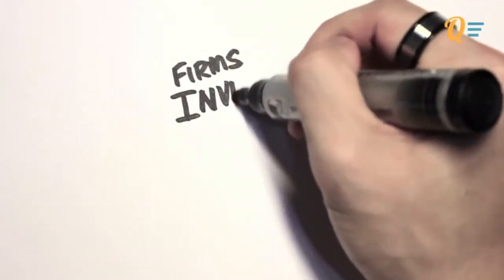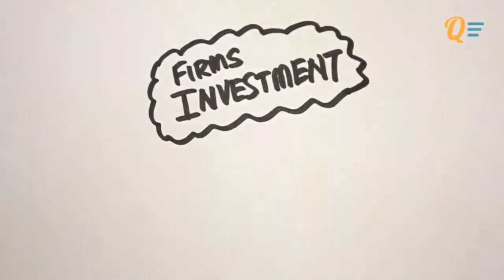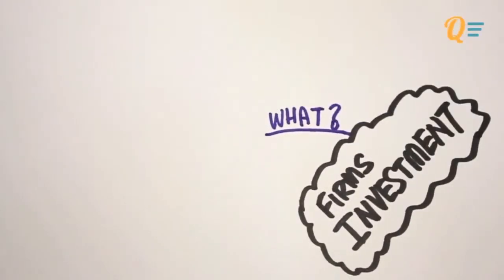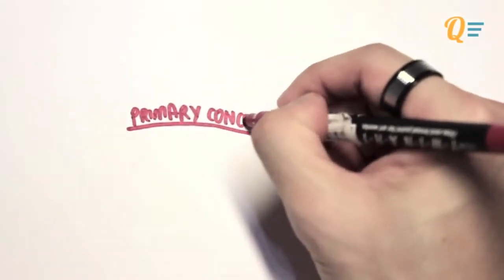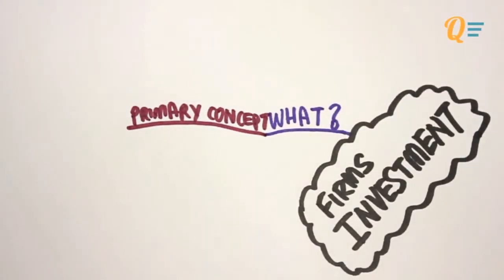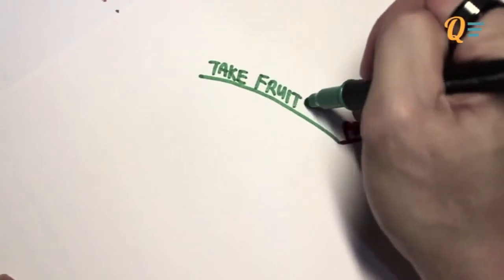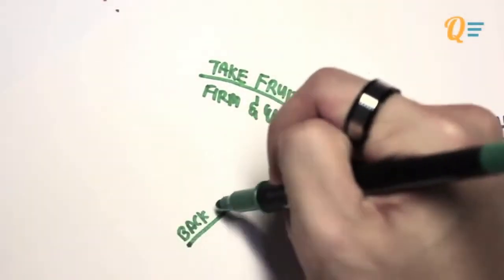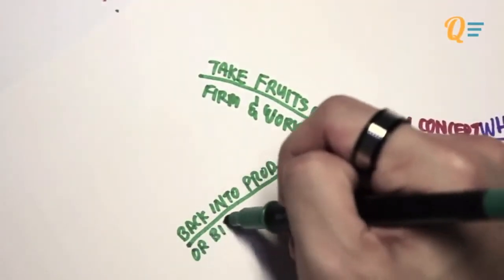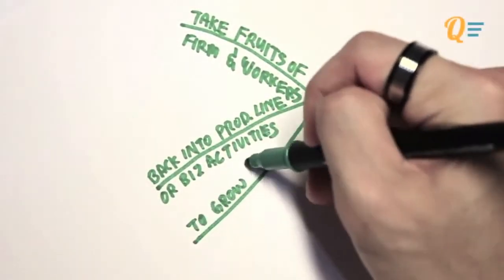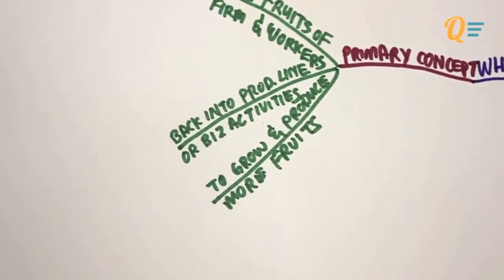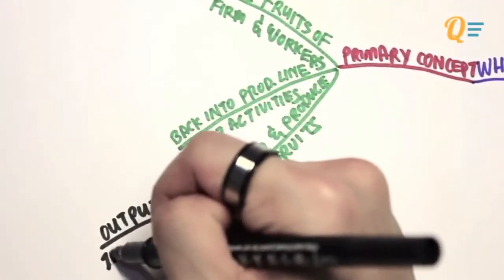In this video, we will be talking about the second component of aggregate expenditure called firm's investment. The first question we're going to ask ourselves is: what is investment? The primary concept of investment is actually quite simple. It is the activity of taking the fruits from the firm and its workers and putting it back into the production line or business activities so that we can eventually create or grow more fruit — meaning more output. According to the A equals Y at equilibrium theory, more output means more income.